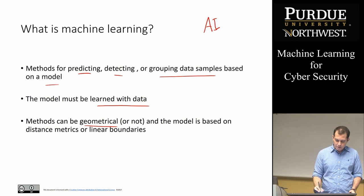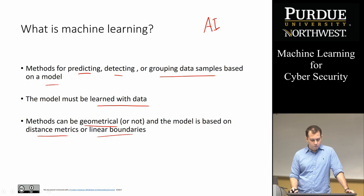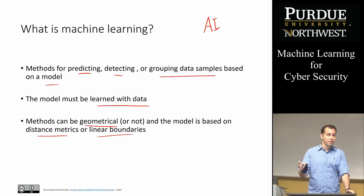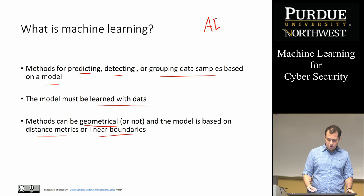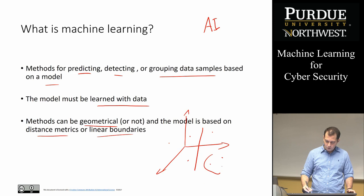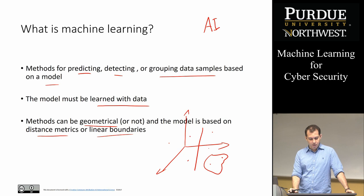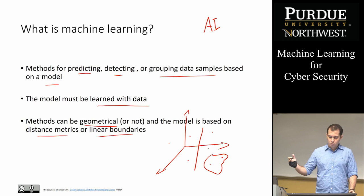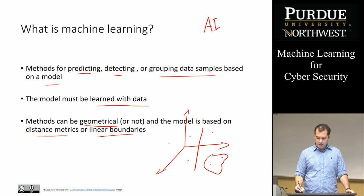As far as models, the methods can be geometrical or not. Geometrical models can be based on distance metrics and linear boundaries. When you think of the vector space model, you're thinking about points, shapes, and building lines or curves in those spaces — there is that concept of geometry. That will become clearer as the videos progress. So machine learning is this idea of learning from data.